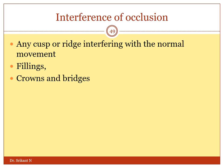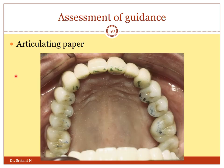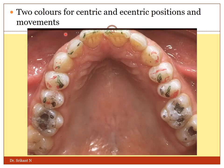Generally, whenever we do a restoration, an articulating paper is used — it is placed between the teeth and the patient is asked to clench. We are supposed to see markings on the palatal cusps of the maxilla because they are the functional cusps. But if you see markings on the buccal cusp, you may have to trim them to maintain occlusion. Two colors of centric and eccentric positions can also be used. In this case, you can make out there are a lot of contacts seen on the buccal surface of the premolar.